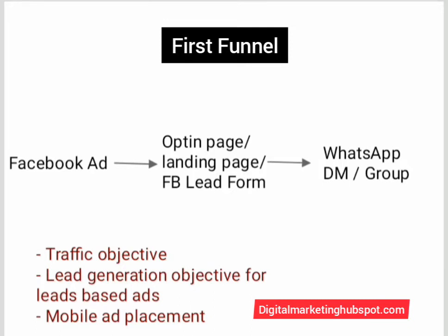That redirection will be to your WhatsApp or your WhatsApp group — either your WhatsApp DM link or your WhatsApp group link. So you can use this funnel for your Facebook-to-WhatsApp advert. The campaign objective you can use here is the Traffic objective. This traffic campaign works for the funnel that goes from Facebook to a landing page and then to WhatsApp.